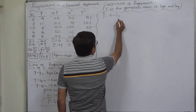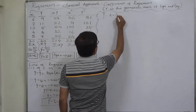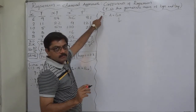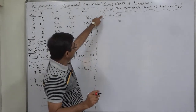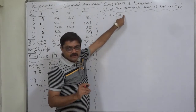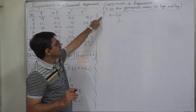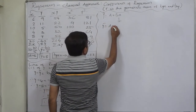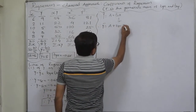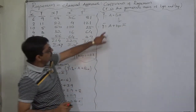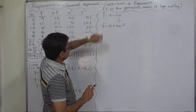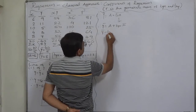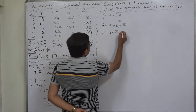If we substitute x-bar into this equation, the result will be y-bar. That is, if we substitute the mean of the independent variable, the result is the mean of the dependent variable. So y-bar equals a plus b_yx times x-bar, which gives us the formula: a equals y-bar minus b_yx times x-bar.